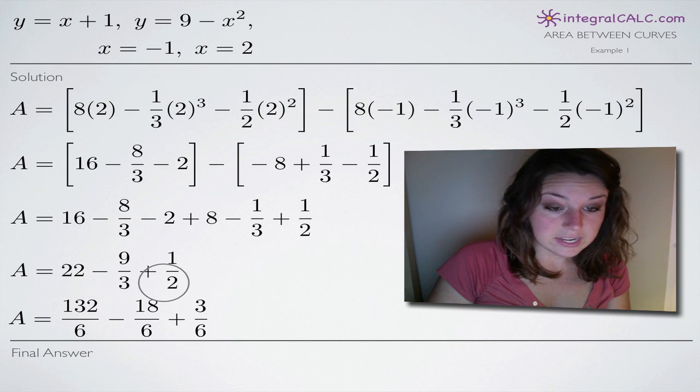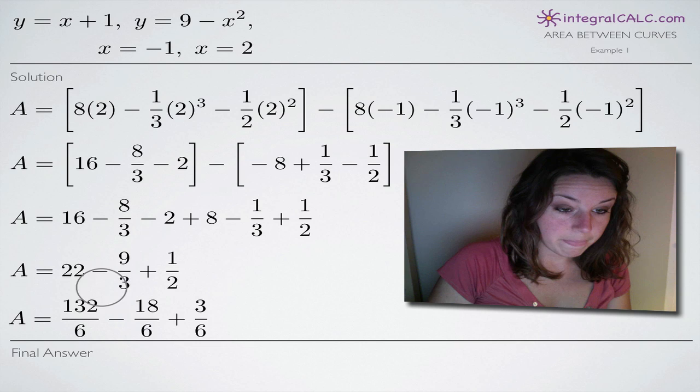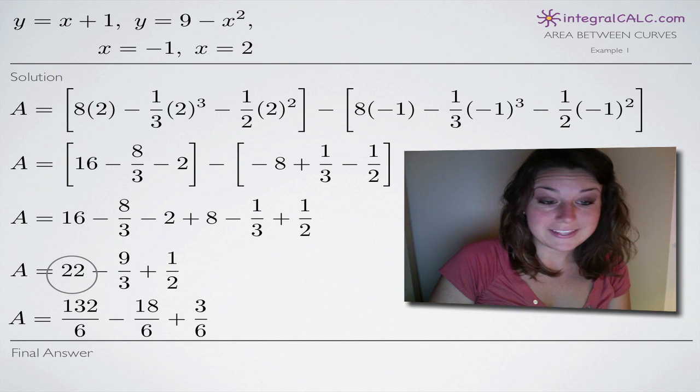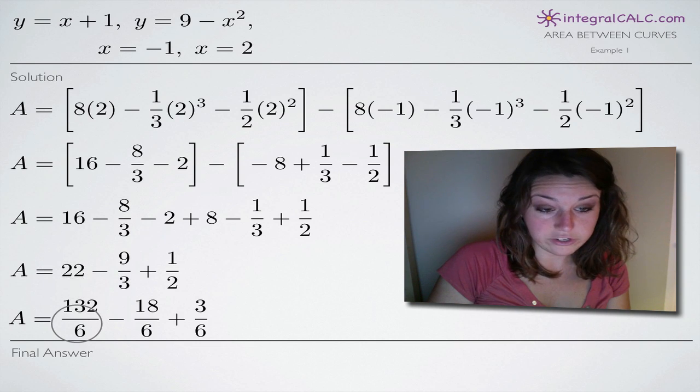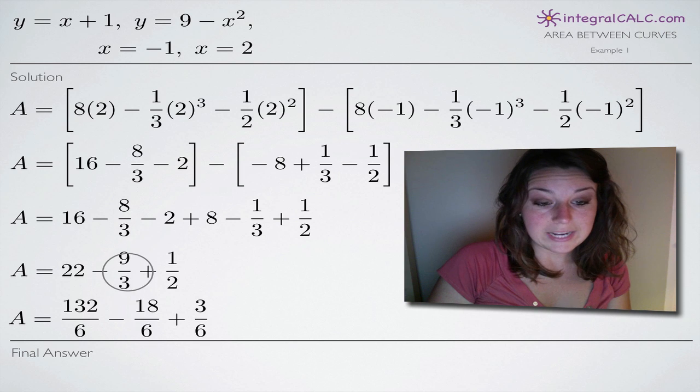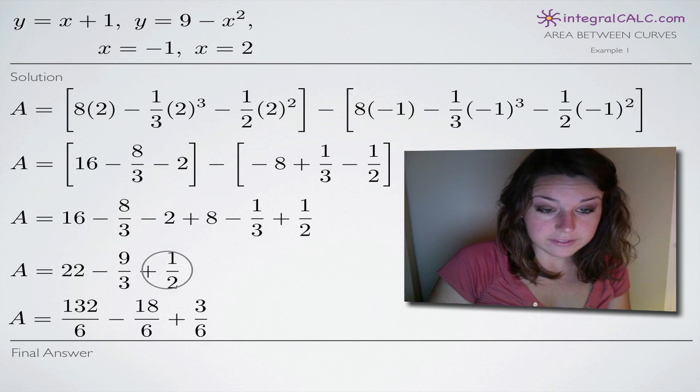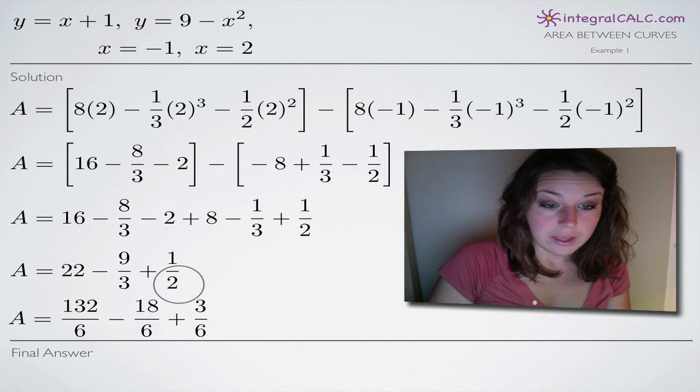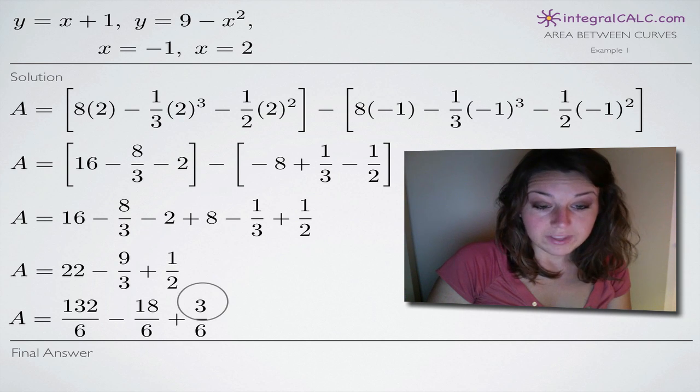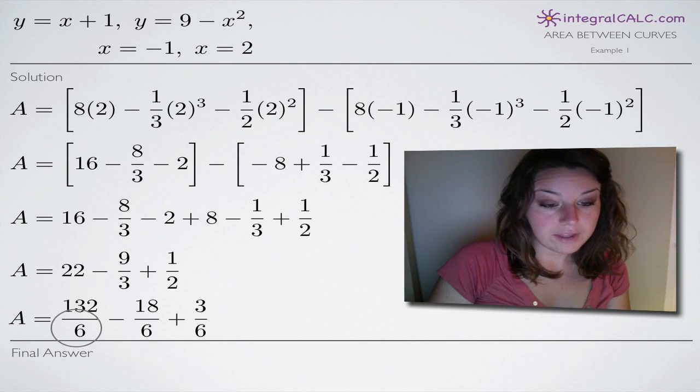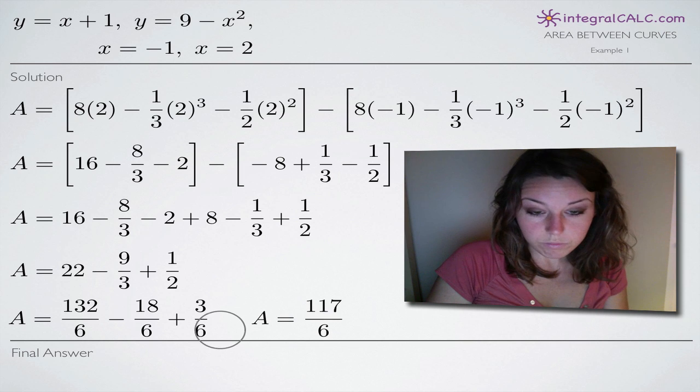Now we're going to find the lowest common denominator which is 6. And here this 22 will multiply by 6 over 6 to get 132 over 6. We'll multiply 9 thirds by 2 over 2 to get 18 over 6, and we'll multiply 1 half by 3 over 3 to get 3 sixths. So now that everything is over 6, we combine them.